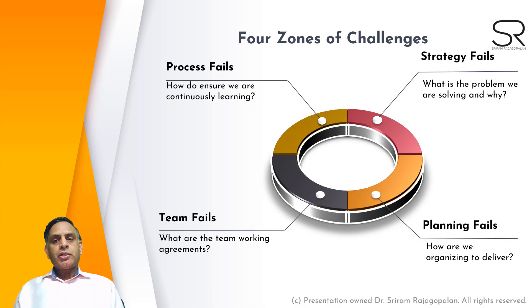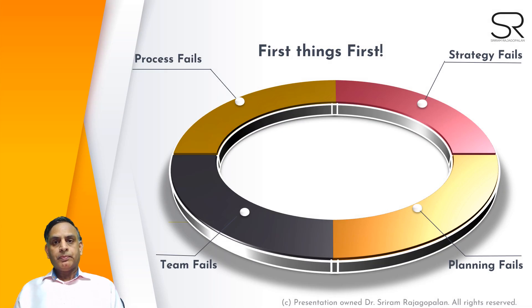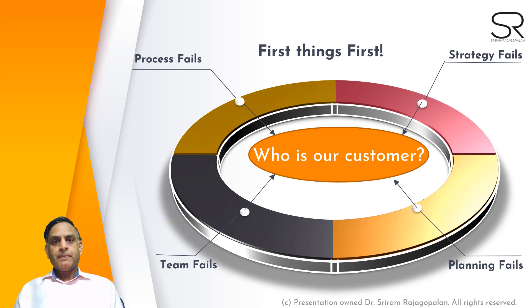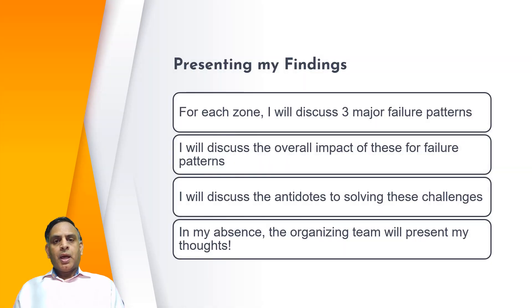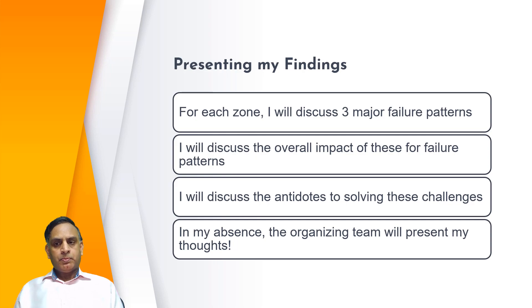When you look at all these important challenges, one challenge stands out even more: not knowing who our customer is. If we don't know our customer, how can we create the appropriate persona, and how can we create appropriate user stories for that persona? In this session, for each of the four zones I discussed, I will present three major failure patterns — twelve major failure patterns in total — and discuss their overall impact within every zone.